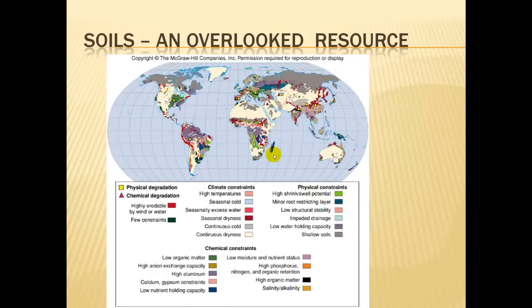Soils, in a lot of ways, are an overlooked resource. We have a lot of issues going on with soils around the world. Soils can be a very renewable resource, but if they're not utilized properly — as you saw in the video — they can erode away or lose nutrients and become a non-renewable resource. We're having issues with soils becoming physically and chemically degraded in the United States. In many places in Iowa, you can see the orangish color in the soils driving along the road — that's because the topsoil has been eroded away, and without fertilizers those fields would not yield what they produce.